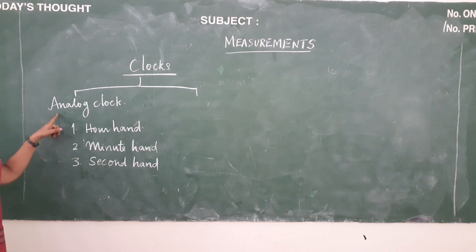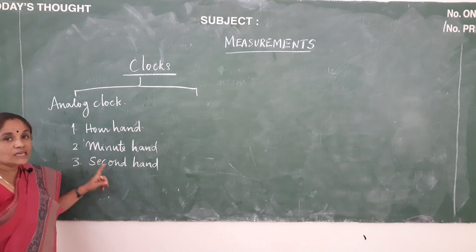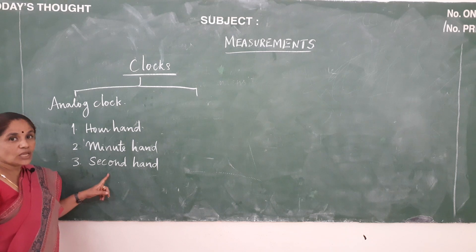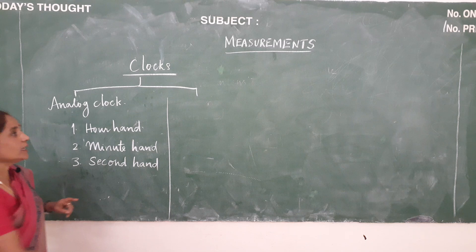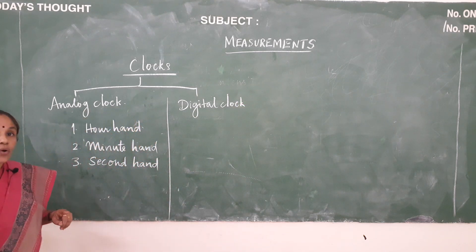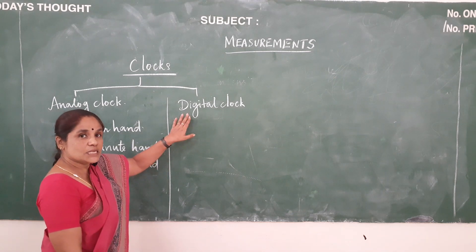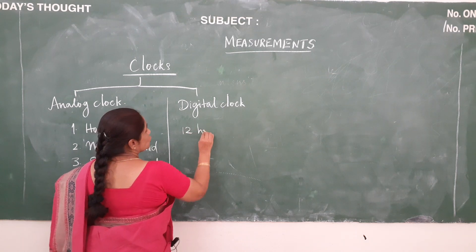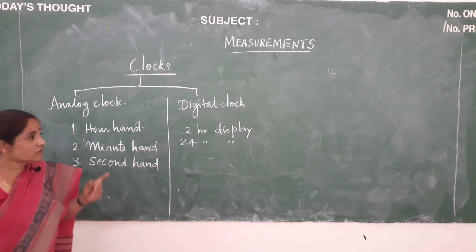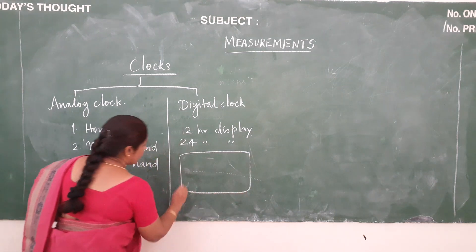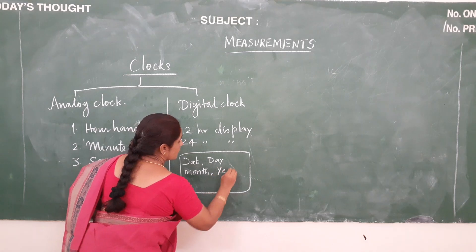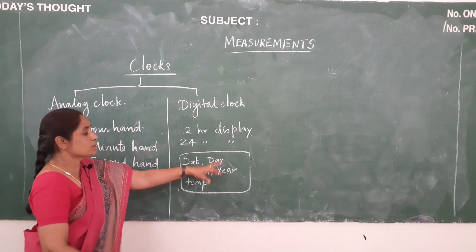One rotation of the seconds hand indicates one minute, and 60 rotations of the second hand indicates 60 minutes which is also equal to one hour. The second type of clock is the digital clock, also called an electronic clock, because the time is displayed directly. It has a 12-hour or sometimes 24-hour display. In recent clocks, date, day, month, year, and temperature are all displayed in a single clock.